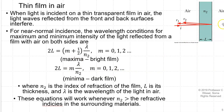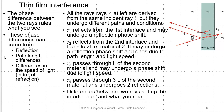The minima on the reflected side will be the maxima on the transmitted side. These equations work whenever N₂ is greater than the refractive indices of the surrounding material — in other words, a thin film in air. The phase difference between the two rays completely rules what you see. These phase differences can come from reflection, path-length differences, and differences in the speed of light — that is, the index of refraction in the various media. R1 reflects on the first interface and may undergo a reflection phase shift. Ray R2 reflects from the second interface, also traversing 2L for path-length difference, and may undergo a reflection phase shift.